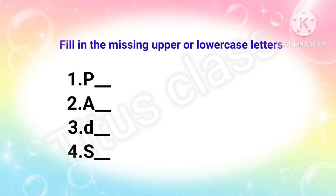Now our next question: fill in the missing upper or lower case letters. First one: P — after P, which letter comes? Q. Second one: A — after A, it's B. Third one: D — after D, E. Fourth one: S — after S, T. So it is very easy: P-Q, A-B, D-E, S-T. This worksheet is also finished.